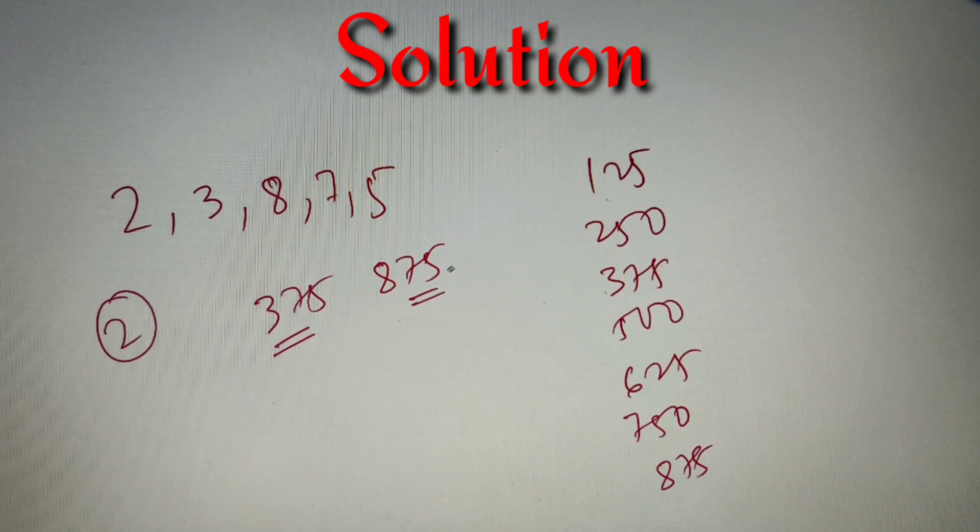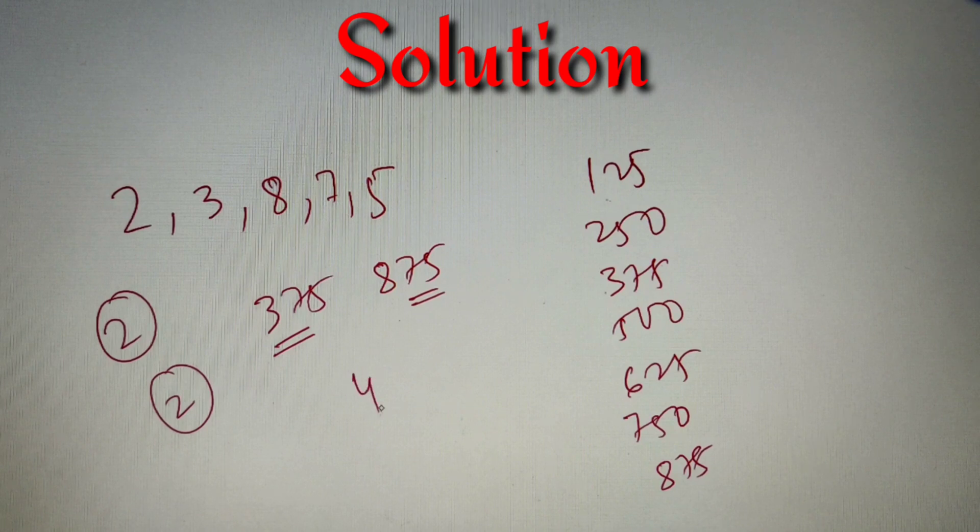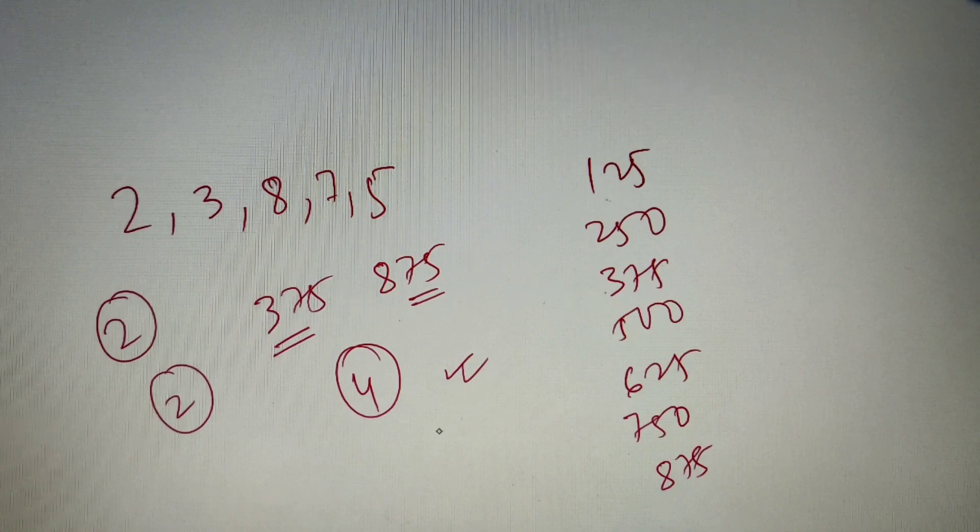Same for the case of 875. If my last three digits are 875, I can form two numbers: 32875 and 23875. So two numbers for this case as well. 2 plus 2 gives me an answer of 4. So out of all the possible ways, there are only four numbers such that the five-digit number is divisible by 125.